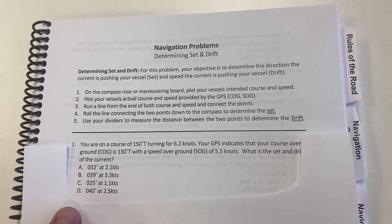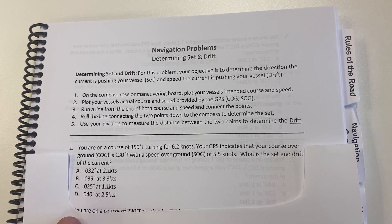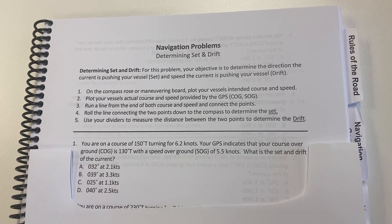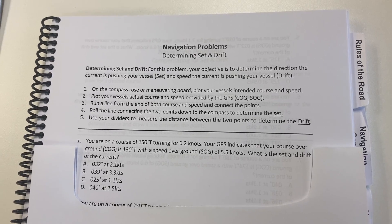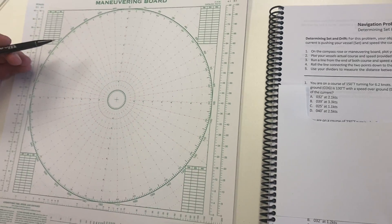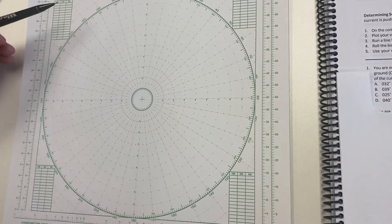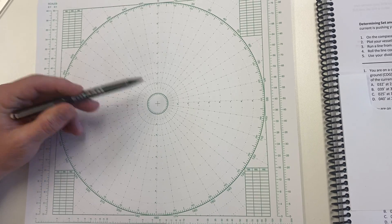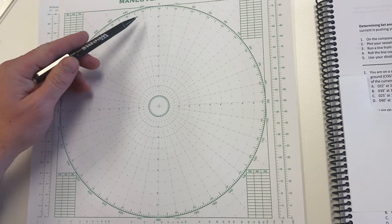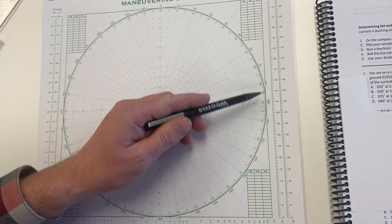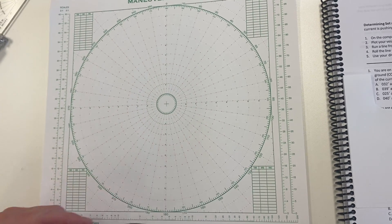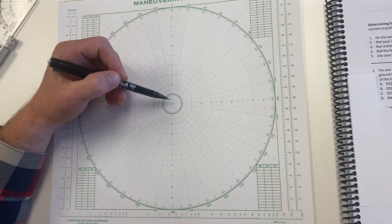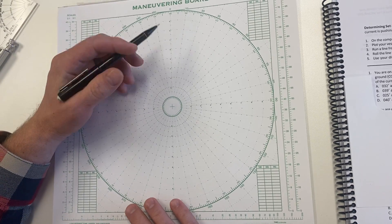We're going to be working problem number one in the workbook. We are here on our maneuvering board, or our mo board as we call them. As before, we're working everything from the center. You can see the outer ring here has our directions in it, and then we have our speeds.